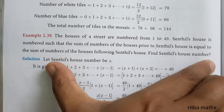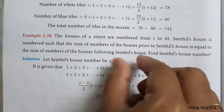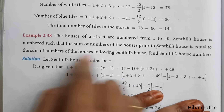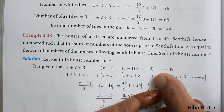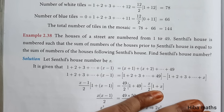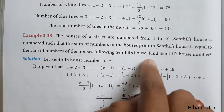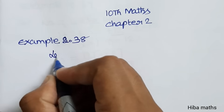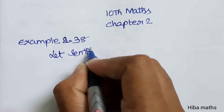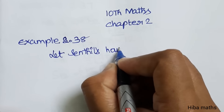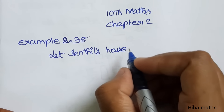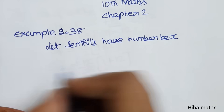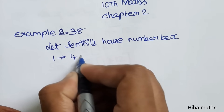So the street is numbered 1 to 49. Sendhil's house is somewhere in between, such that the sum on the left side equals the sum on the right side. Let Sendhil's house number be x. The total houses are numbered 1 to 49.